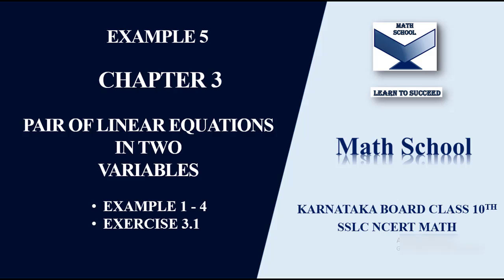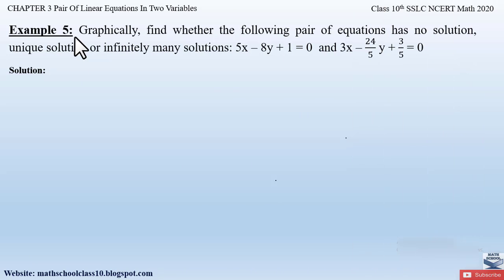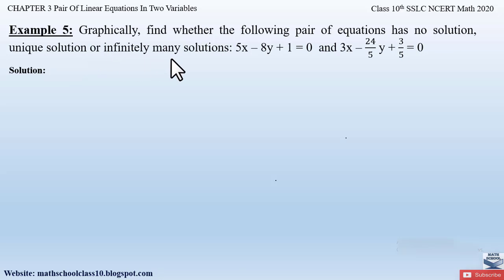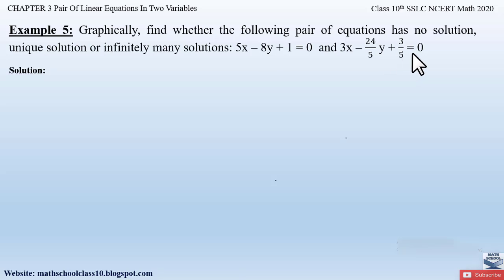Example 5 from Chapter 3, Pair of Linear Equations in Two Variables. The question says: graphically find whether the following pair of equations has no solution, unique solution, or infinitely many solutions. The given two equations are 5x minus 8y plus 1 equal to 0, and 3x minus 24/5 y plus 3/5 is equal to 0.